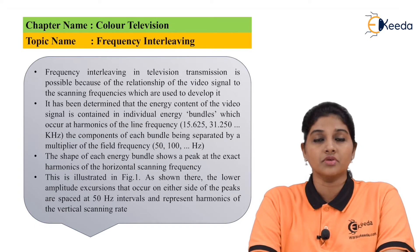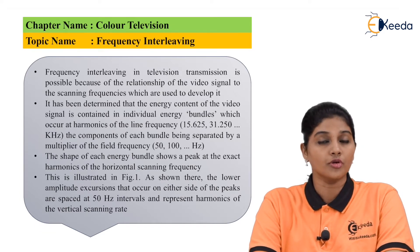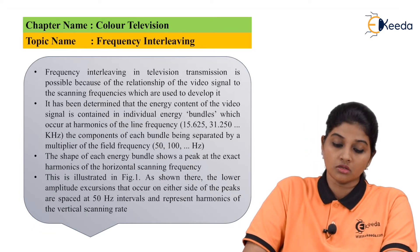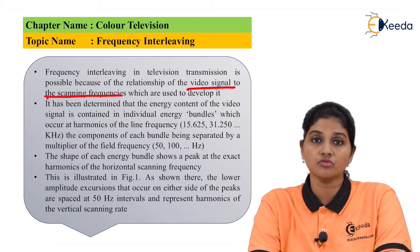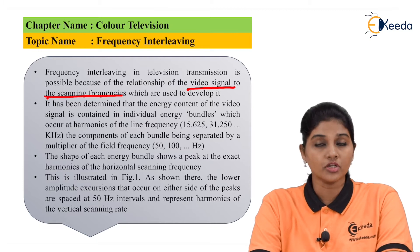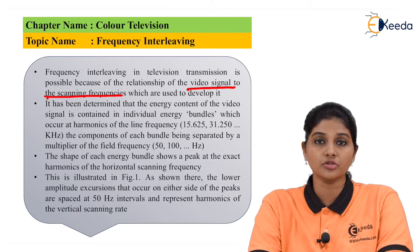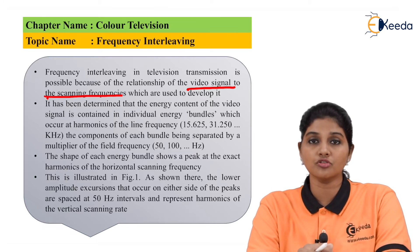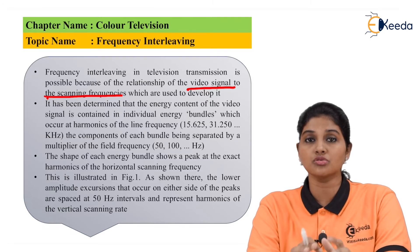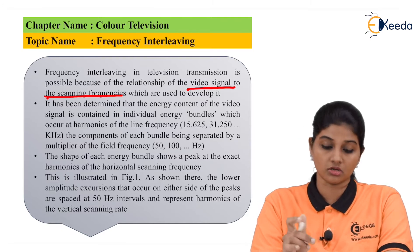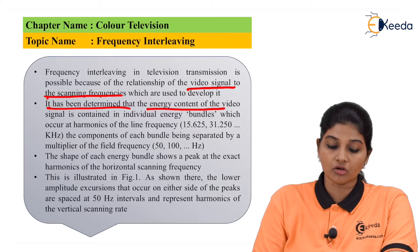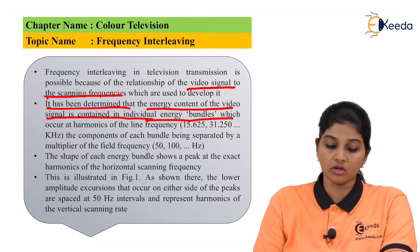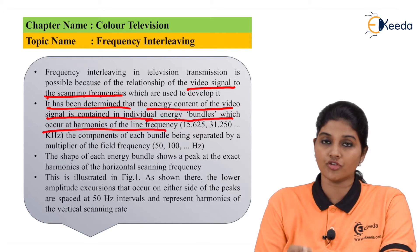Frequency interleaving in color television is possible because of the relationship between the video signal and the scanning frequencies which produce the video signals. It has been determined that the energy content of the video signal is contained in individual energy bundles which occur at harmonics of the line frequency.